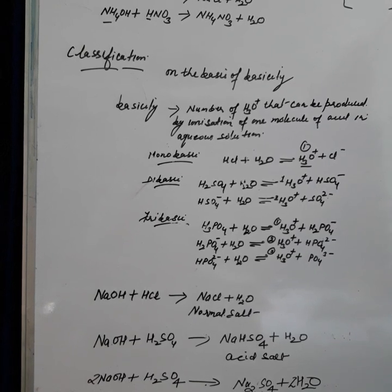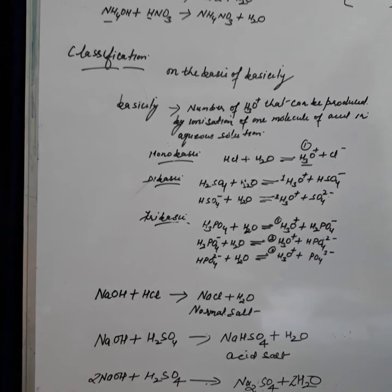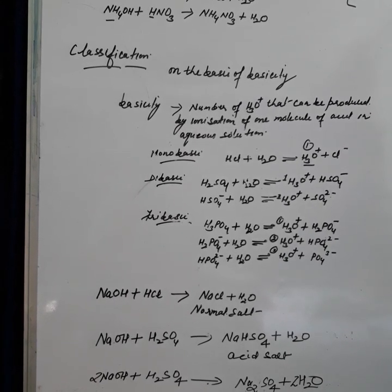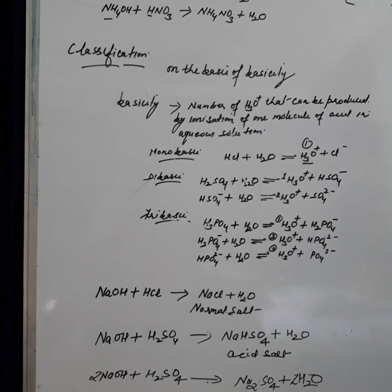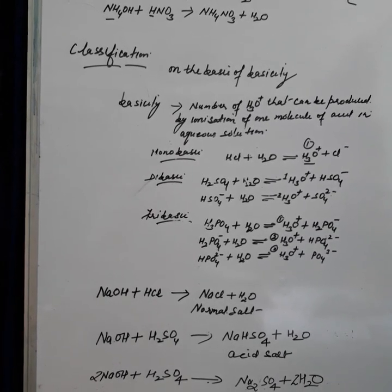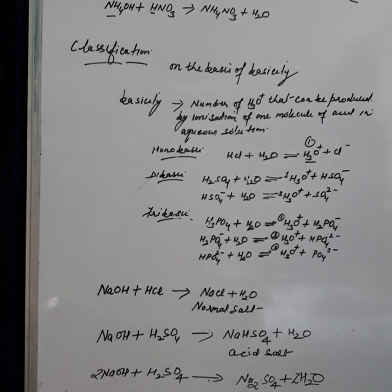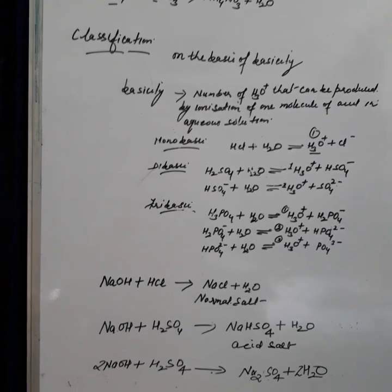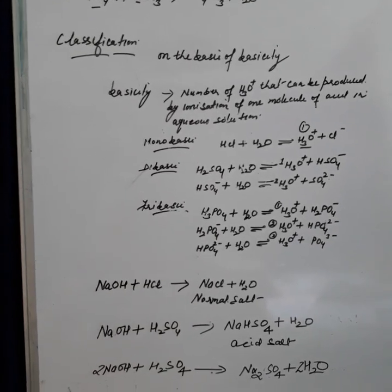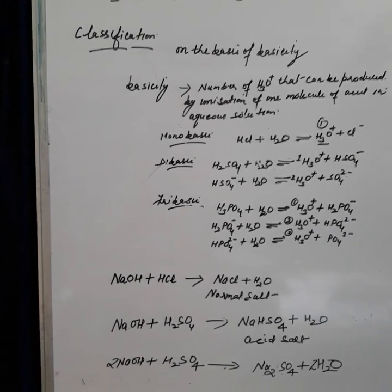Organic acids are derived from living organisms — mostly from plants. They are non-corrosive, or very weakly corrosive, and they are weak acids.